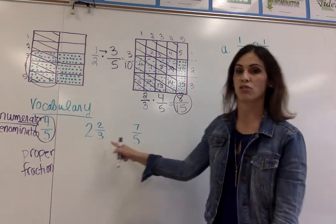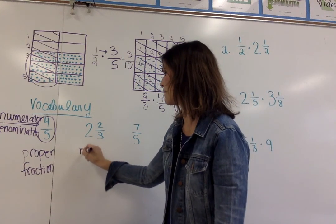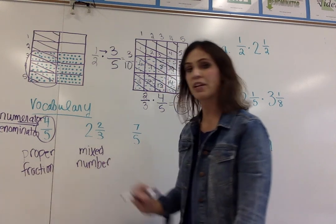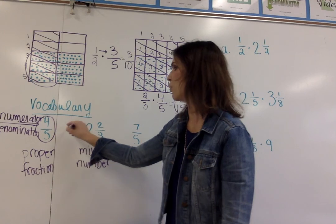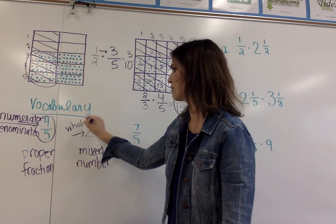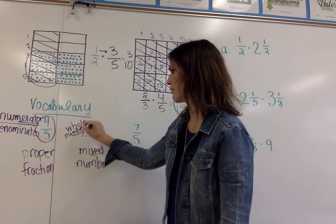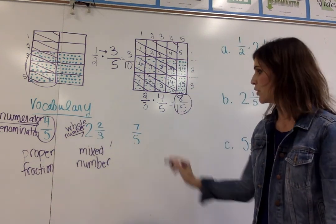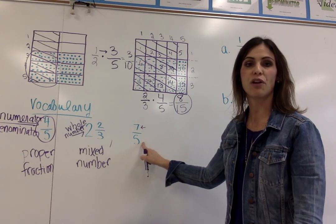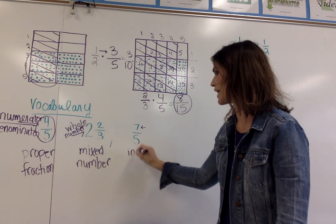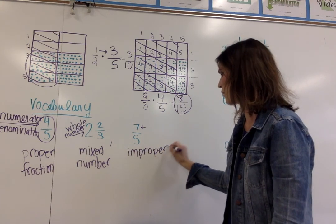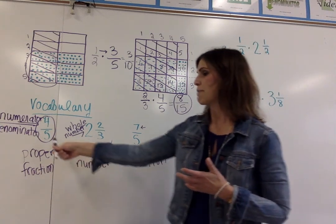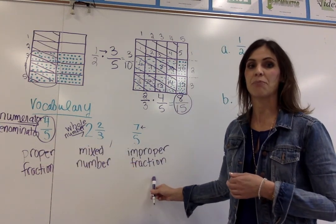Looking at two and two-thirds — that is what we call a mixed number. The reason it is a mixed number is because I have a whole number, in this case two, and also a fraction, two-thirds. When the numerator — in this case seven — is larger than the denominator, we call this type of fraction an improper fraction. So we have three types of fractions: a proper fraction, a mixed number, and an improper fraction.